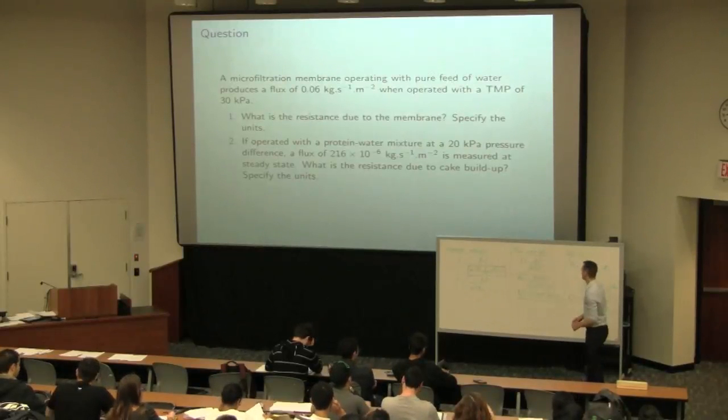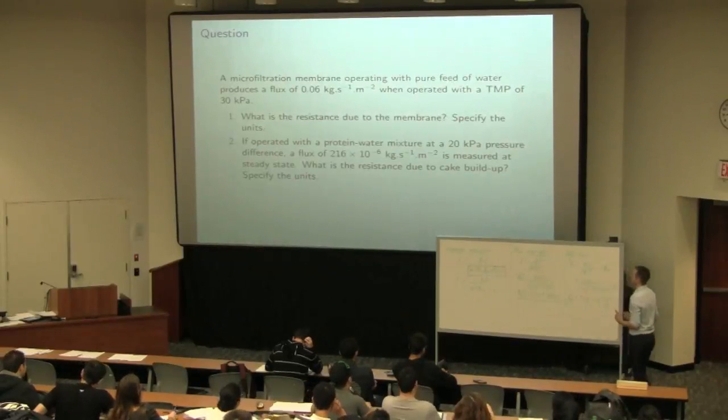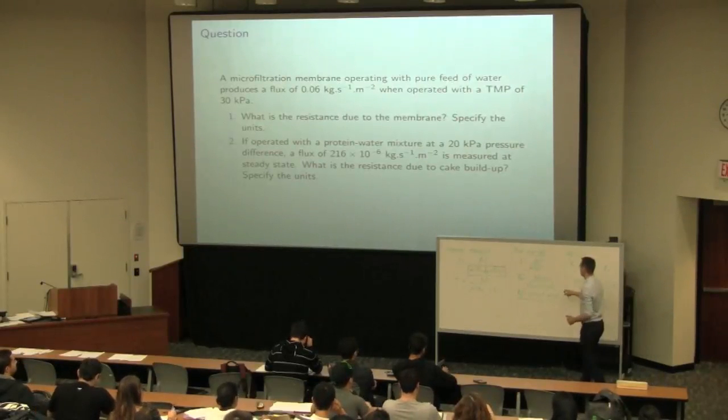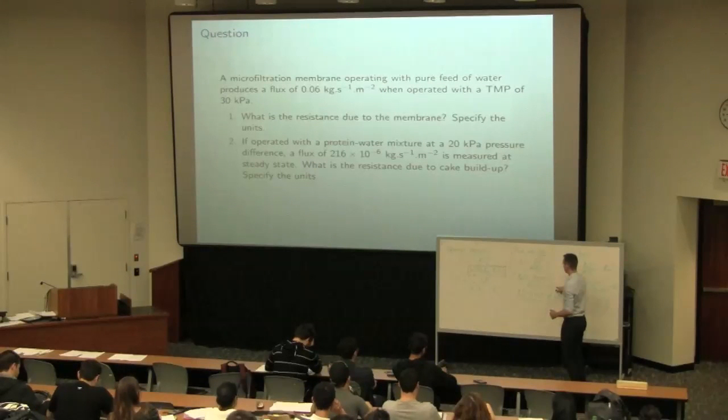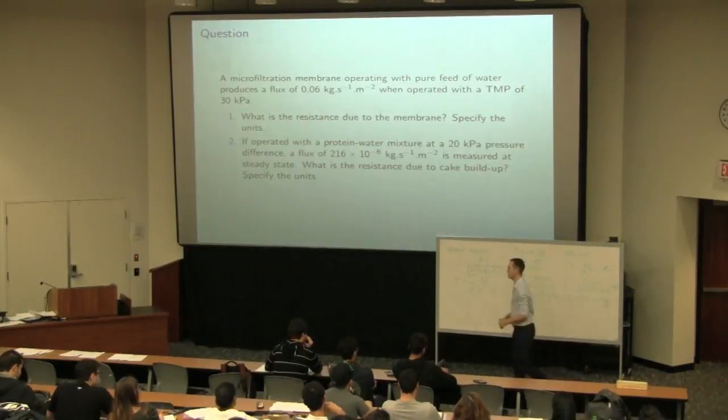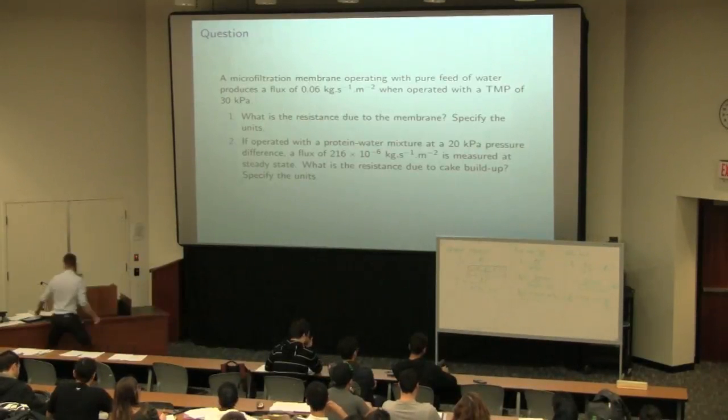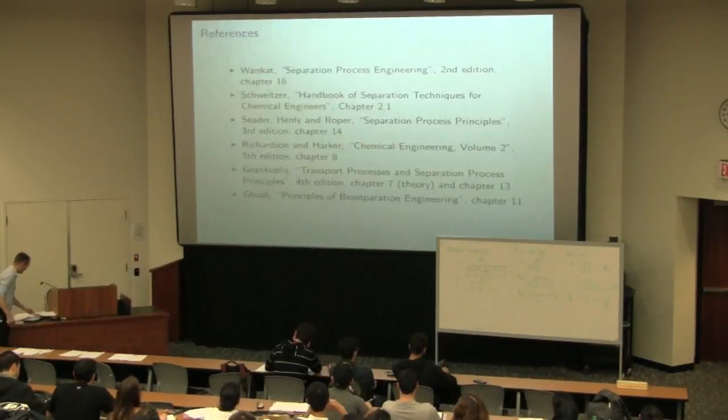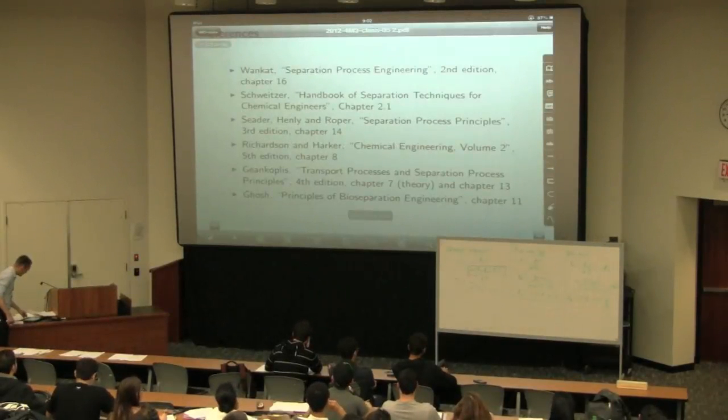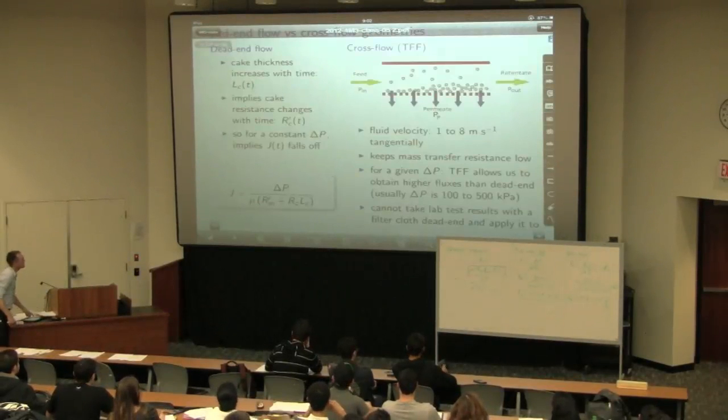Substituting the numbers, the pressure drop across the membrane, the transmembrane pressure, 30,000 pascals. The viscosity of water in the denominator and then the flux J that we're observing. If you work with the units, you can show that they cancel out and get meters squared per kilogram. That's one way to do it. The other way is to just use the, given up here, we had in the class a few slides into yesterday.